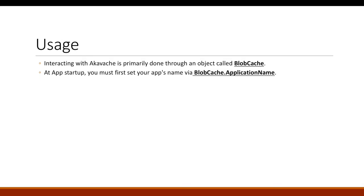For usage, the primary object to use when working with Akavache is BlobCache. Using BlobCache you can access all the specific APIs within the Akavache library. For every BlobCache instance, you should specify an application name — this is not strictly mandatory but it helps differentiate caches easily. It is better to have an app name defined at app start.